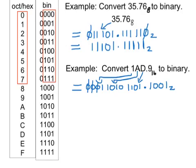So if I rewrote this, the answer would be that 1AD.9 base 16 is equal to 110101101.1001 base 2.